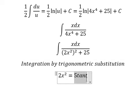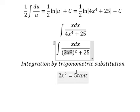If we expand that, we get 25 times tan squared(t). We can do factorization: tan squared(t) plus 1 becomes secant squared(t), and we simplify by dx.